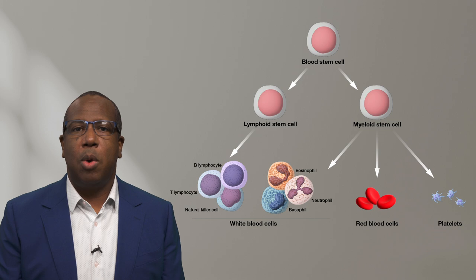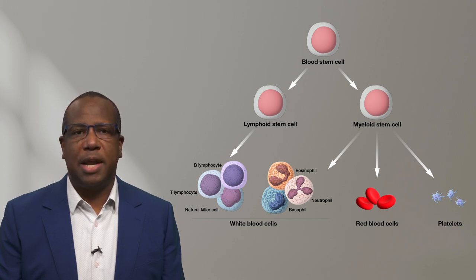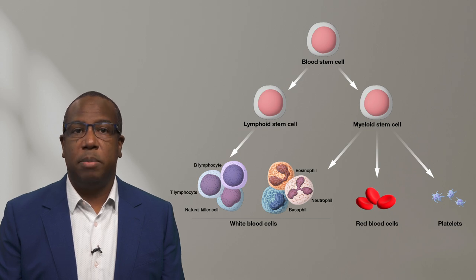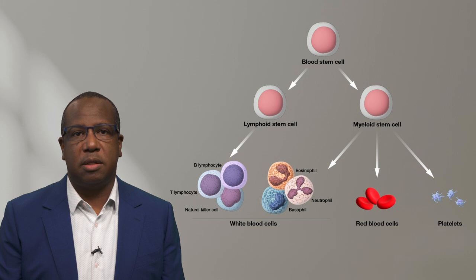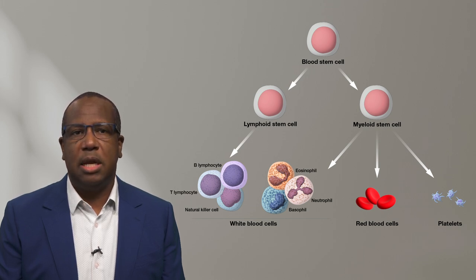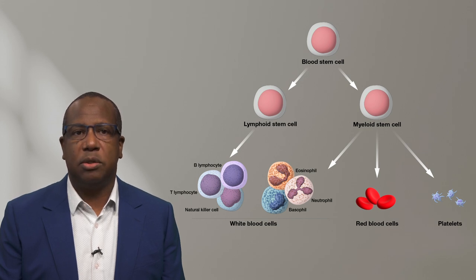White blood cells are a part of your immune system and help to fight infections and diseases. Platelets are blood cells that form clots to stop bleeding. Red blood cells contain hemoglobin, a protein that carries oxygen to your body's organs and tissues.